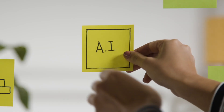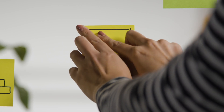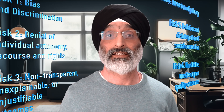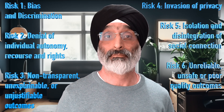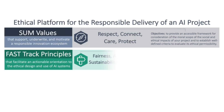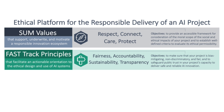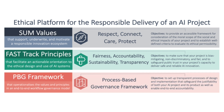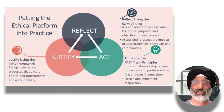So today we'll look at why ethical AI design is important. To begin with I'll list six areas of potential harms that can be caused by poor AI design and use, and then I'll outline three building blocks that can form the ethical platform for the responsible delivery of an AI project. Finally I'll outline how Professor Leslie suggests you can put the ethical platform into practice by ensuring you reflect, act and justify your design and implementation processes.